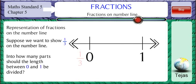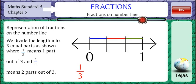Suppose we want to show 1 by 3 or 1 third on the number line. Into how many parts should the length between 0 and 1 be divided? We divide the length into 3 equal parts as shown, where 1 by 3 or 1 third means 1 part out of 3, and 2 by 3 or 2 third means 2 parts out of 3.